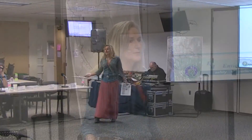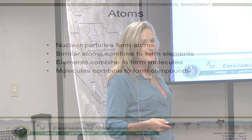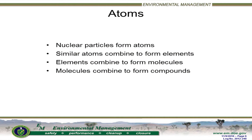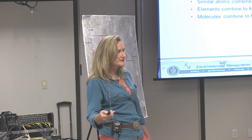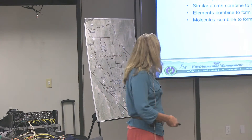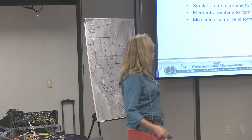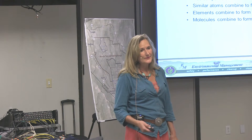The nucleus and nuclear materials are the founding blocks of atoms. Similar atoms combine to form elements — for instance, two hydrogen atoms form the element hydrogen, then helium, and so forth. Elements combine to form molecules. Hydrogen and oxygen become the molecule of water. And then many different molecules can form compounds.